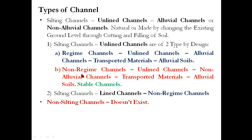Alluvial unlined canals where both bed and transported material are alluvial can be called regime canals. Non-alluvial soil unlined canals have two different materials and are called non-regime canals. Similarly, lined canals are non-regime canals because the lining material is different from the suspended or transported material — so two different materials exist.